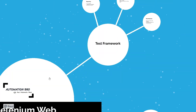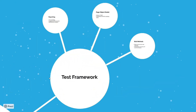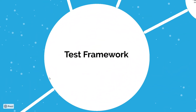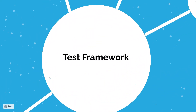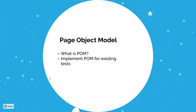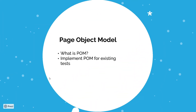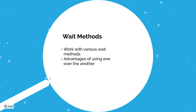From there we moved on to building our test framework. We began with learning the page object model and how to implement it within our tests. Then we also learnt how we can stabilise our framework by learning the different wait methods that are available to us.